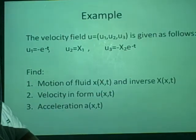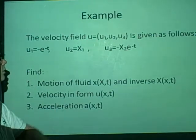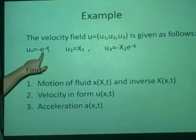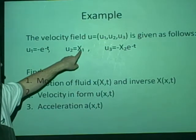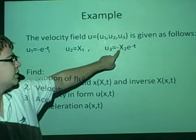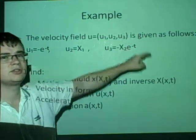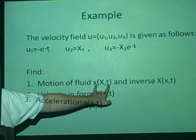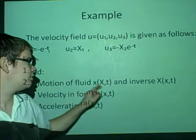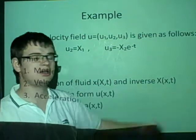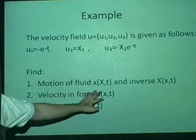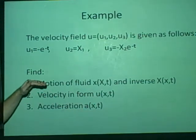Right, the velocity, here's an example. The velocity field u, u1, u2, u3 is given as follows: u1 is minus e to the minus t, u2 is big X1, u3 is minus X2 e to the minus t. And they want us to find the motion of the fluid, so little x in terms of big X and t, and then we'll find the inverse of that, which is the big X in terms of little x and t. We want to find the velocity and the acceleration, but we'll just do the first one first.